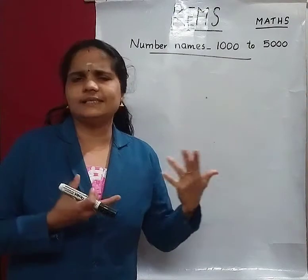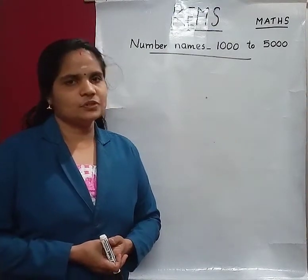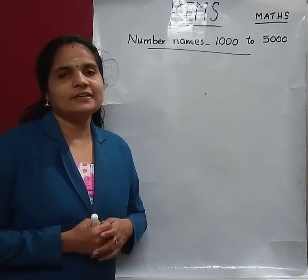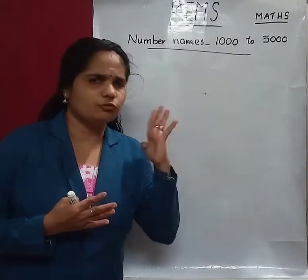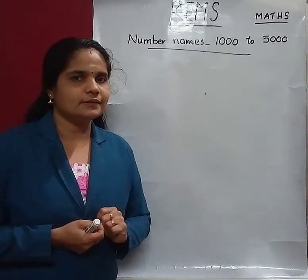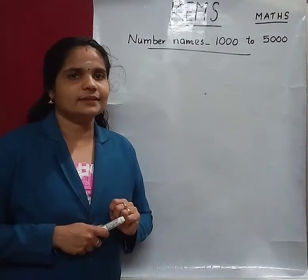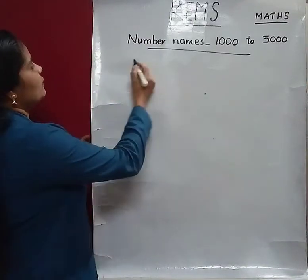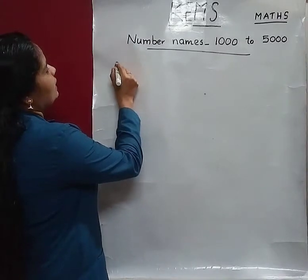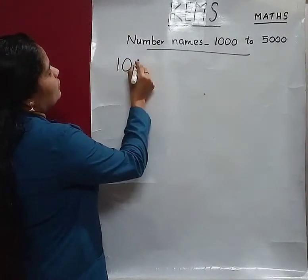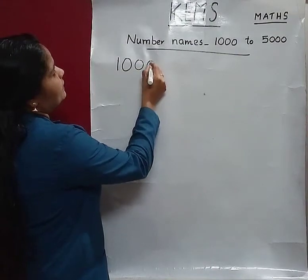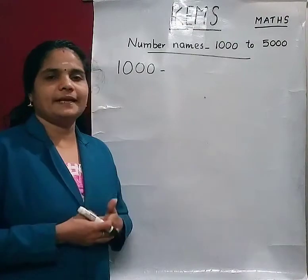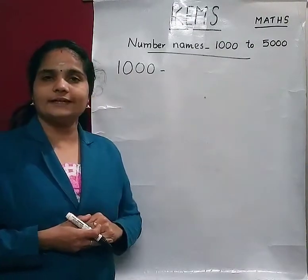That is very easy to understand. So are you ready? Yes. So children, which is the smallest 4-digit number we learned in the last class? Yes, 1000. Very good. 1000 — one triple zero. That is 1000. What are the place values of this number 1000?